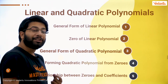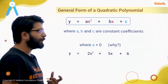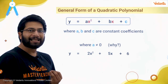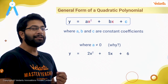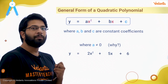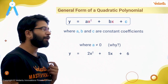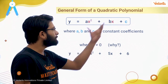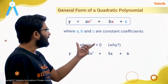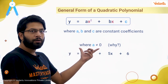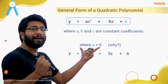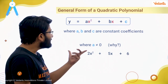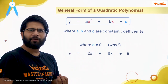Now let's see the general form of the quadratic polynomial. The quadratic polynomial is the polynomial which has degree 2, which means there must be a term of x square. The general form is ax square plus bx plus c. We can see that a cannot be 0, because there must be a term of x square; otherwise the degree won't be 2. Our example is 2x square plus 5x plus 6.